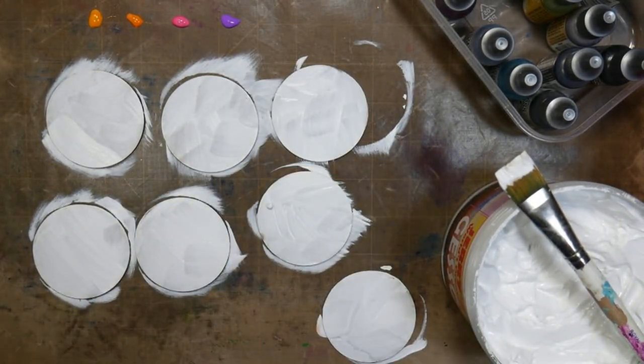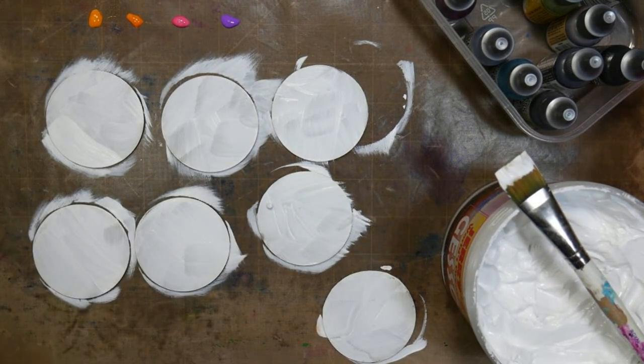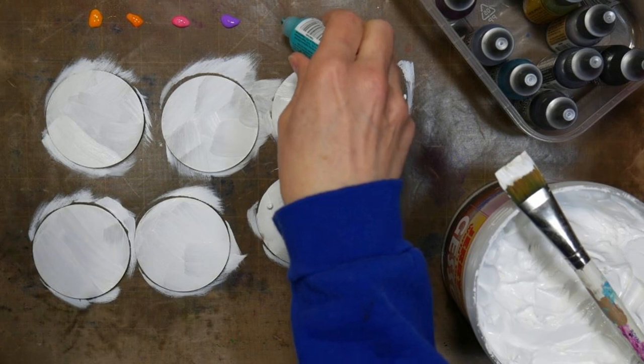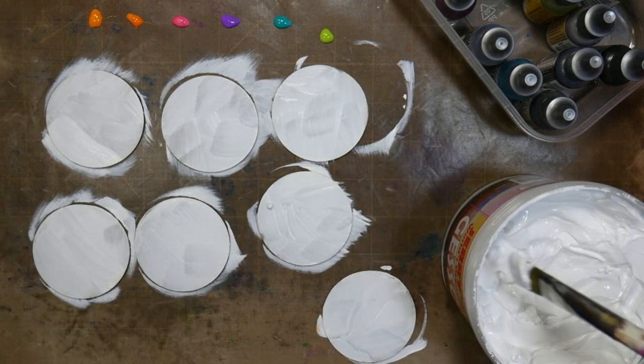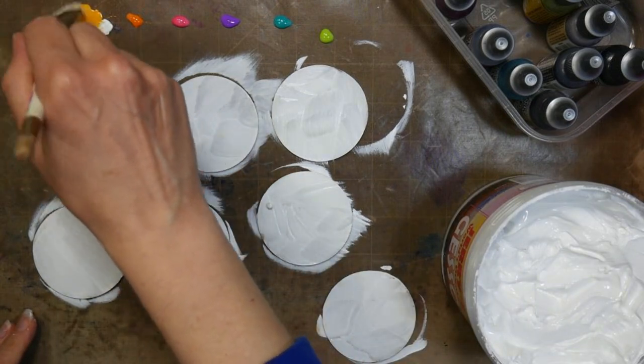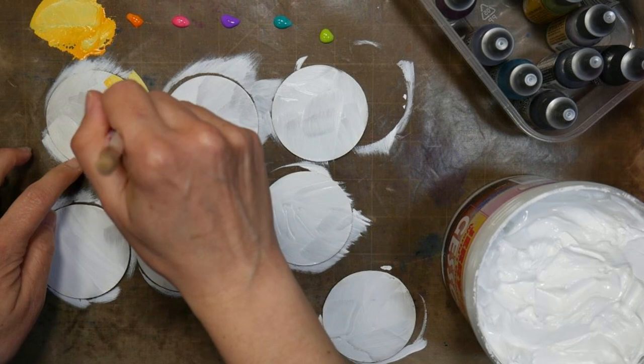These artist trading coins are made from MDF and can be purchased at TopFlightStamps.com. They're quite affordable and have a nice substance if you want to make these to trade. Otherwise you could cut out two and a half inch circles from heavyweight chipboard or a few layers of cereal box and do the same thing.